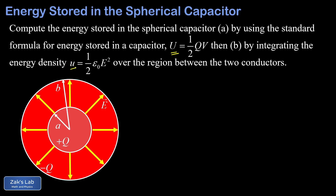We integrate the energy density formula over the region between the two charged shells of the capacitor. On the left we have our spherical capacitor, made of two concentric charged conducting shells. The inner shell has a radius of a and a charge of +Q, and the outer shell has a radius of b and a charge of −Q. There's an electric field between the plates pointing radially outward, and we've already computed that field magnitude in the first video: E = Q / (4πε₀r²), derived using Gauss's law.